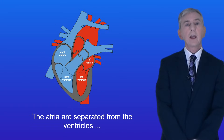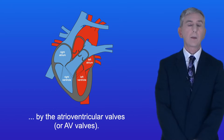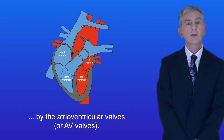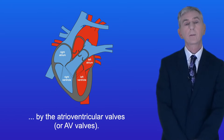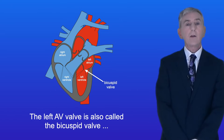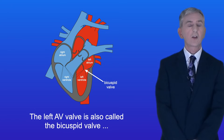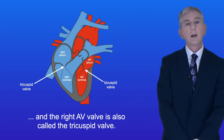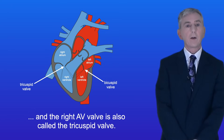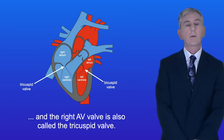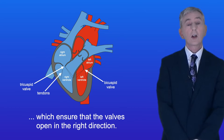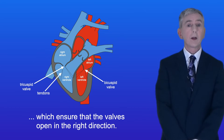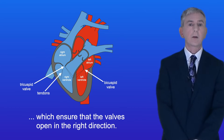The atria are separated from the ventricles by the atrioventricular valves, or AV valves. The left AV valve is also called the bicuspid valve and the right AV valve is also called the tricuspid valve. These valves are attached to tendons which ensure that the valves open in the right direction.